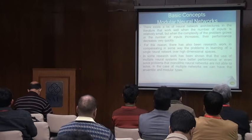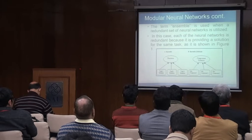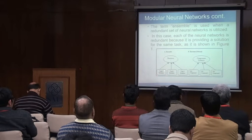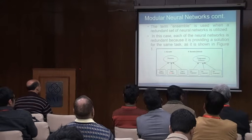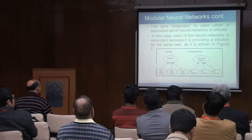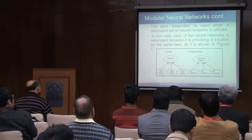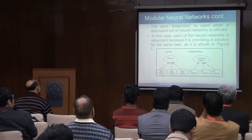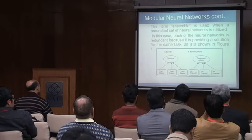In this case, with multiple networks, we can have ensemble or modular networks. For example, you can have one, two, and three modules that solve the same task — this is called an ensemble. We use different architectures and different learning algorithms, making them like experts. The important thing here is how you can manage the decision process, which is called aggregation of results.